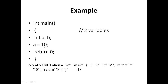Ten is a constant — that is a token. Semicolon is a separator. Return is a keyword. Zero is a token. Semicolon is a separator. Closing brace is a token. Total number of tokens: 18. These 18 valid tokens are forwarded — the sequence of tokens is the output of lexical analysis.